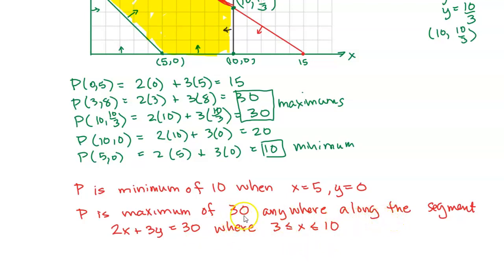So that's how we're going to define the segment. All along that segment, p is 30. And so the equation for that line is 2x plus 3y equals 30, but it's only for that section between 3 and 10, because that's the only part that's within our feasible region. So that's actually our solution to this equation. We have the minimum is pretty straightforward. The maximum is a little more complicated because we had two corners with the same maximum.